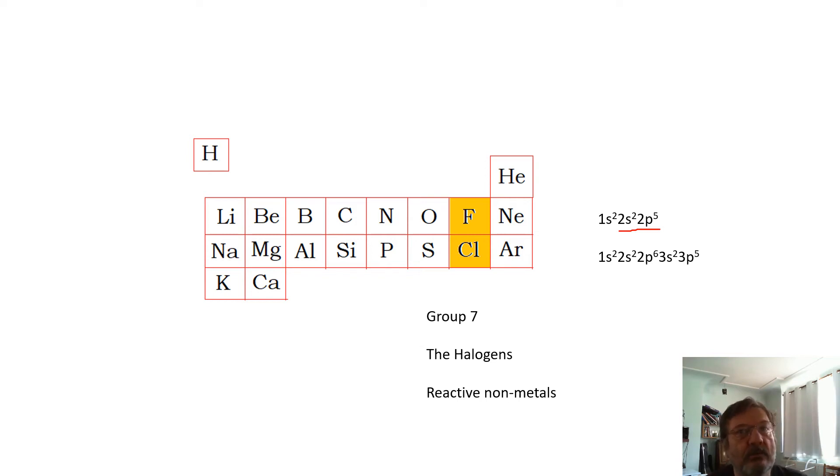They would like to get hold of another electron. Look at this: 2s2 2p5—it wants another electron. Here, 3s2 3p5—it wants another electron. Group seven, the halogens: they are reactive non-metals.